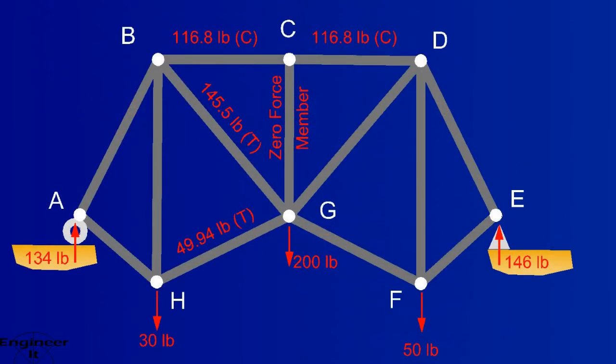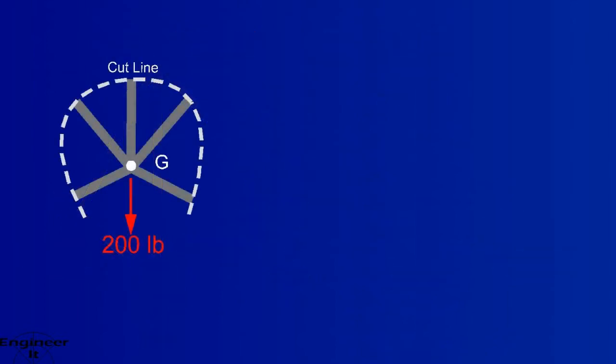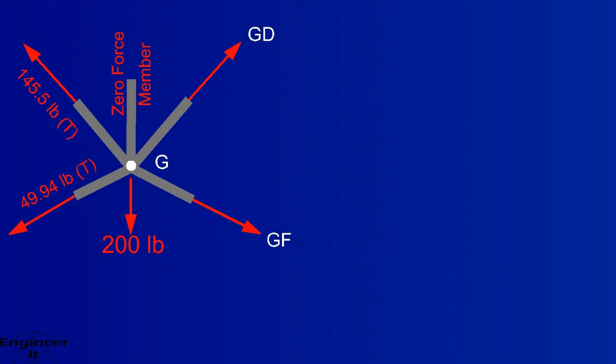So let's look at the members we know so far. It looks like member GD is the only remaining member to solve for. This section could do it, but let's try a more challenging approach. Try isolating the members attached to joint G. Draw the free body diagram and add forces. Assume GD and GF are in tension. If these are in compression, the solution will be negative.